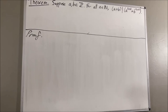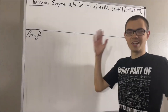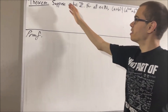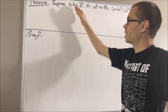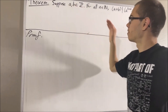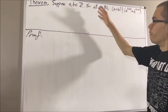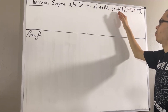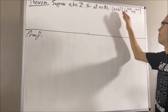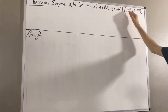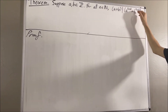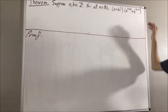Hello! In this video, we are going to prove the following theorem: suppose A and B are integers. For all natural numbers n, A plus B divides A to the 2n plus 1 plus B to the 2n plus 1.